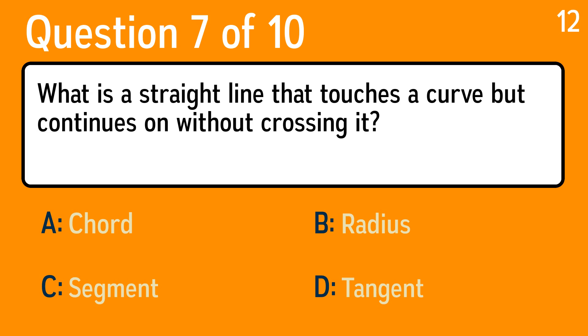Question 7, what is a straight line that touches a curve but continues on without crossing it? The correct answer is D, tangent.